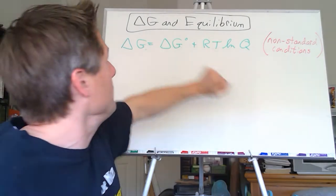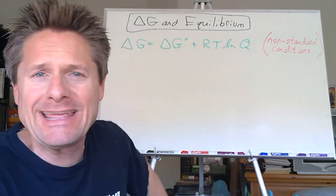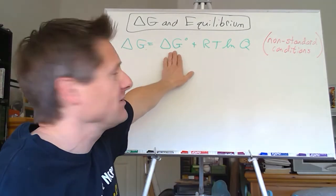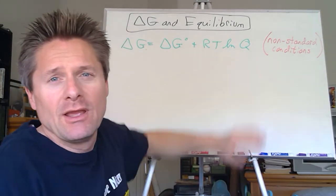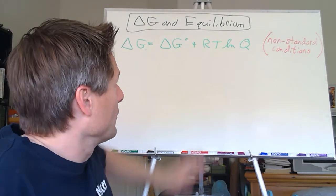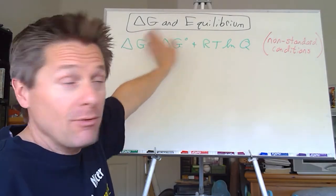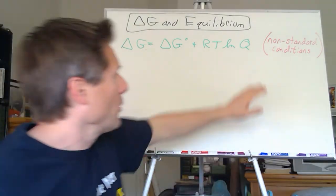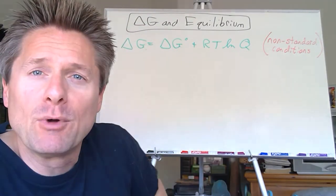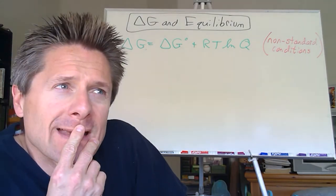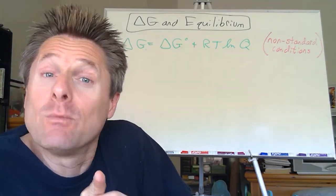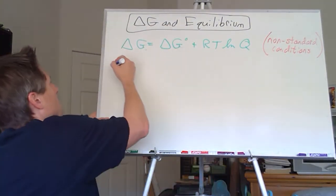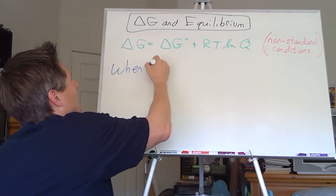Delta G in equilibrium — remember, delta G at any temperature, any conditions, standard or non-standard, doesn't matter. All we do is take our standard Gibbs free energy and adjust it with some correction factor. For non-standard conditions, remember Q is for non-equilibrium partial pressures or molarities. What if we are at equilibrium?